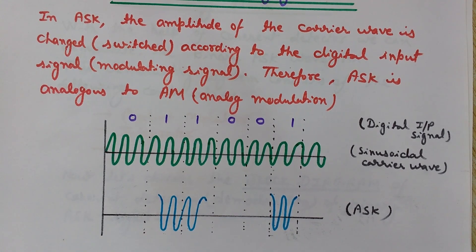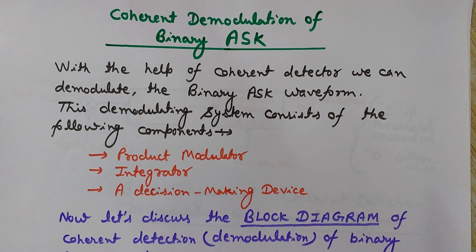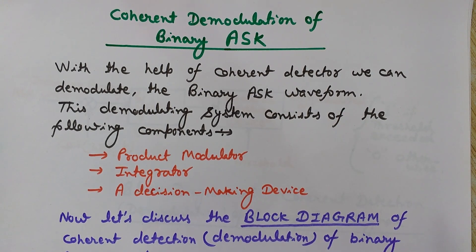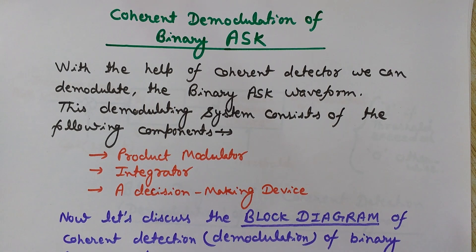Now we will see the coherent demodulation of binary ASK. In the process of coherent demodulation we use two carrier waves — one at the transmitting end and another at the receiving end. The carrier wave at the transmitting end is modulated by the modulating signal, while the carrier wave at the receiving end is locally generated by a local oscillator. In coherent detection, these two carriers at both ends must be synchronized in both phase and frequency.